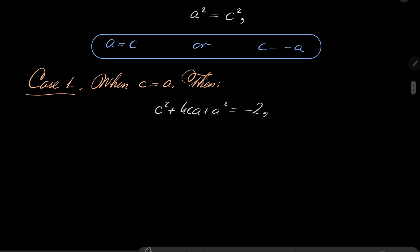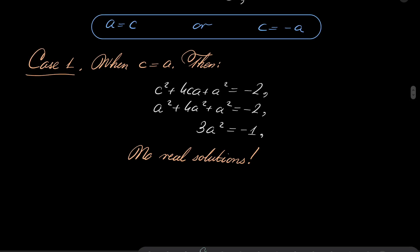So c² + 4ca + a² = -2. And now let's put, instead of c, we'll put a. So we have a² + 4a² + a² = -2. So after division by 2, we'll get 3a² = -1. And recall that we are solving our system in the real numbers. So this has no real solutions.